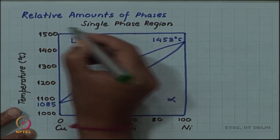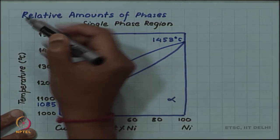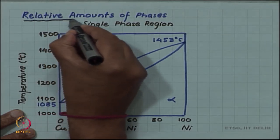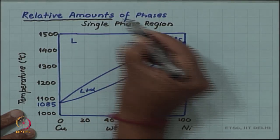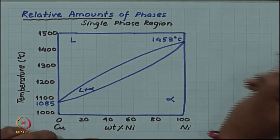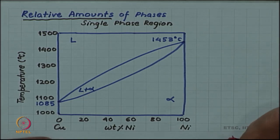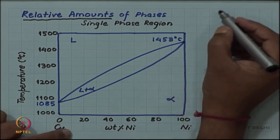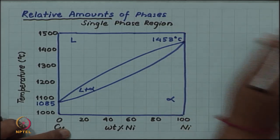First of all, it is very important to understand the distinction between composition and the relative amount. To a beginning student, this itself sometimes causes confusion because both of them are expressed as percentage or fractions, but the two are actually having very different meanings.